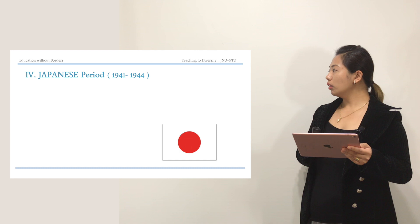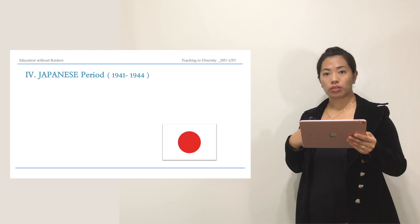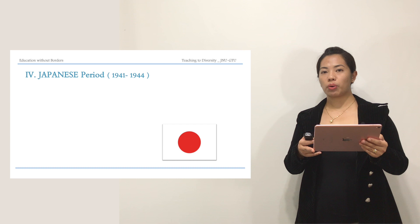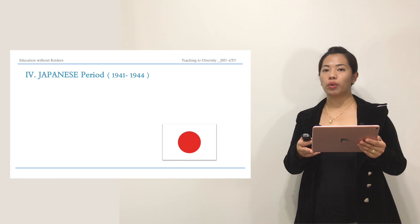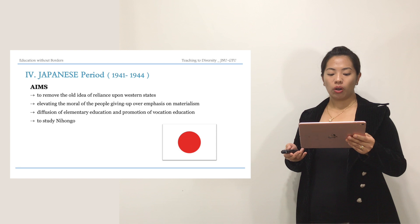After the American regime came the Japanese period, which was from 1941 to 1944 — only around three years. The Americans stayed in the Philippines for around 48 years and the Spaniards for around 333 years, whereas the Japanese stayed for only around three years until World War II was finished.